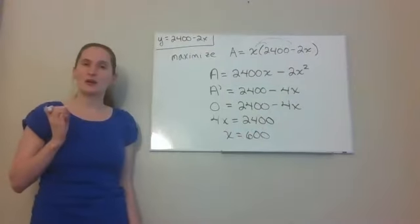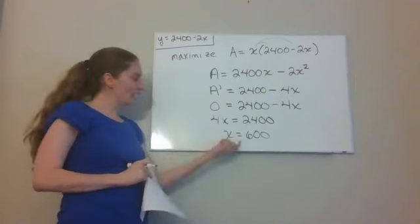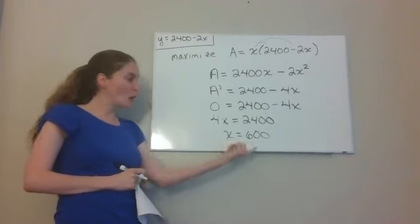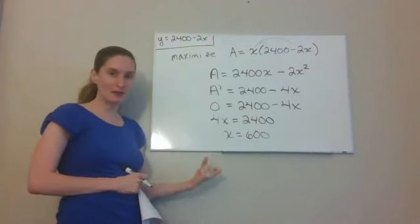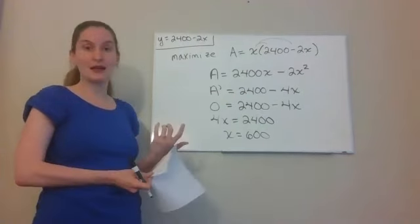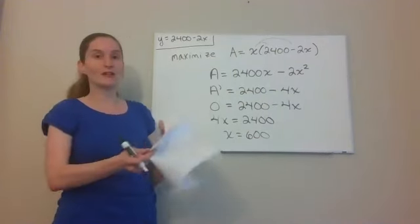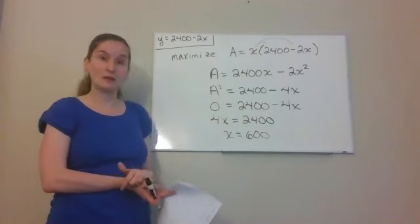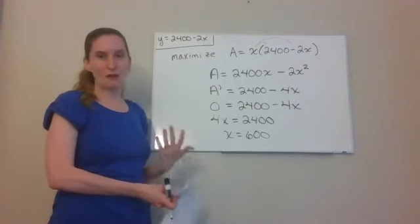Students often forget to check this next step — it's very important to verify that your critical value gives the correct type of result. My only critical value is x equals 600, and I hope it gives a maximum. Think about it this way: if a farmer hired you to maximize their field's area and you actually minimized it instead, you'd be in serious trouble. So we need to verify we actually have a maximum.